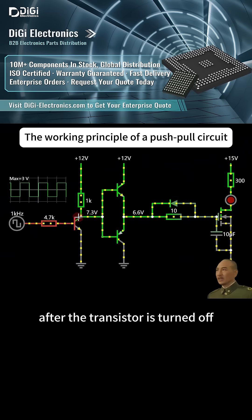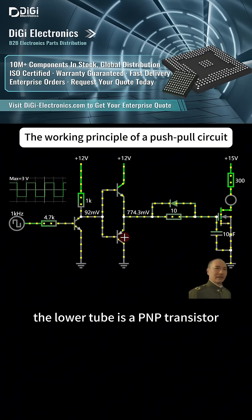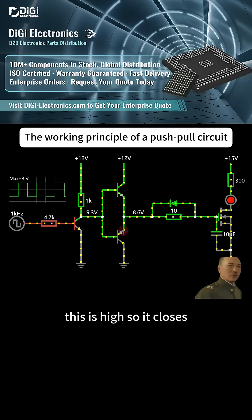After the transistor is turned off, 12V will arrive. At this point, the tube is an NPN transistor, so it turns on. The lower tube is a PNP transistor. This is high, so it closes.